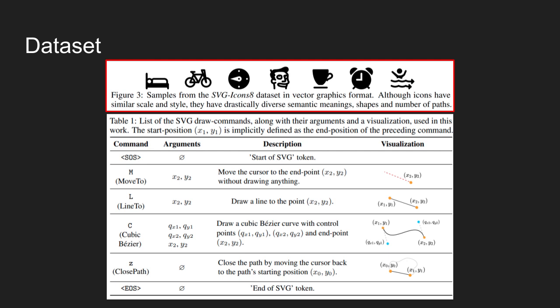Different from raster graphics, where the content is represented using a rectangular grid of pixels, vector graphics employs, in essence, mathematical formulas to encode different shapes. Scalable vector graphics, also called SVG, is an XML-based format for vector graphics. In its simplest form, an SVG image is built up hierarchically as a set of shapes called paths. A path itself is defined as a sequence of drawing commands that constitute a closed or open curve.